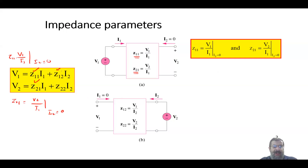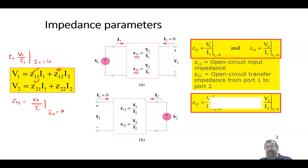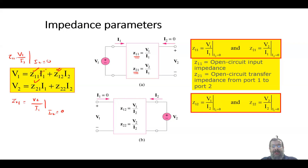From that configuration you can find z12, which is v1/i2 when i1 = 0. Now you have made i1 equal to zero, so z12 = v1/i2 when i1 = 0.